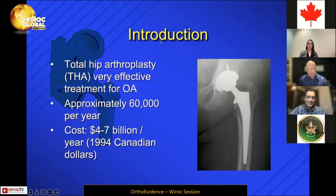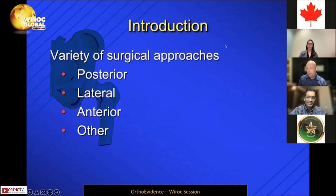I'm going to try to lay the land a bit for our speakers. We all know total hip is a very effective treatment for osteoarthritis — we're up to over 60,000 cases a year done in Canada, with a significant cost to the health care system. We all know there's a variety of surgical approaches.